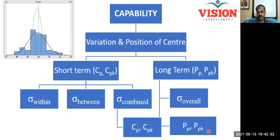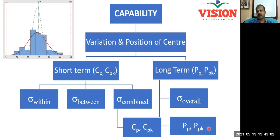So Pp and Ppk are overall capability indices — otherwise the overall performance indices, the long-term process performance indices. However, Cp and Cpk are short-term capability indices, and you can calculate Cp and Cpk only when the process is in statistical control. Otherwise, use the overall standard deviation and calculate Pp and Ppk.